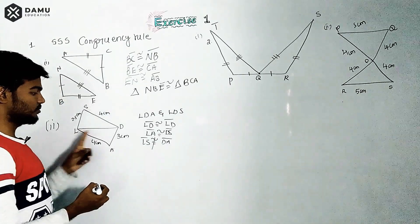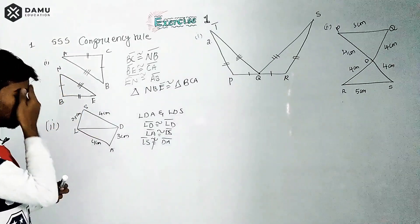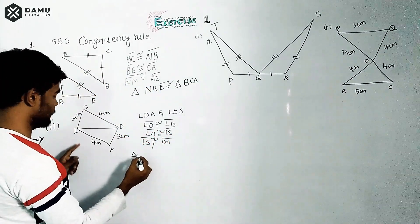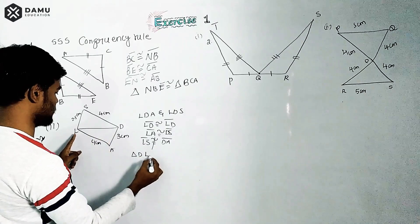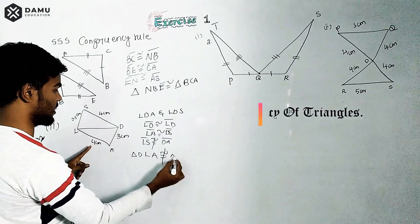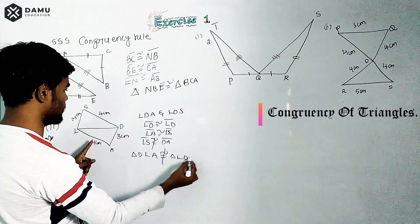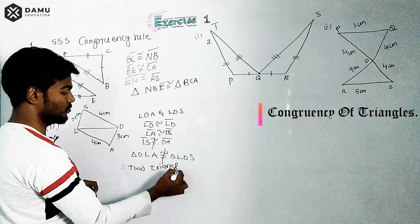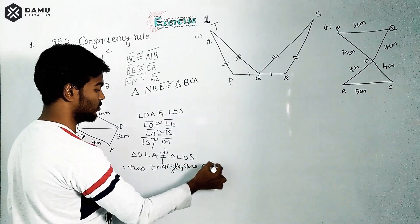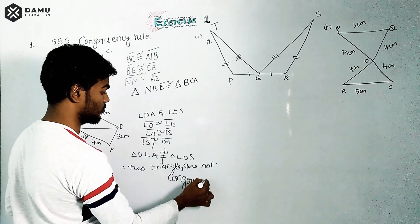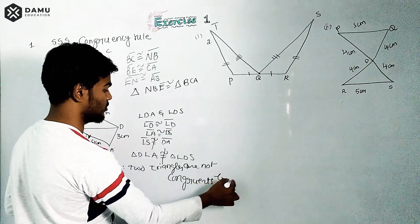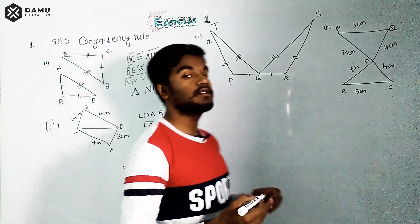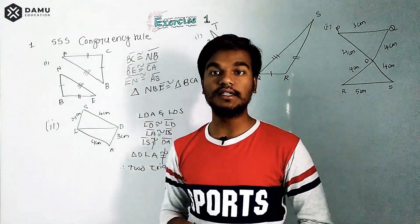However, LS is 2.5 centimeters and DA is 3 centimeters — these are not equal. Since the three sides are not congruent to each other, triangle LDE is not congruent to triangle LDS. Therefore, these two triangles are not congruent by the SSS congruency criterion, because all three measurements are different.